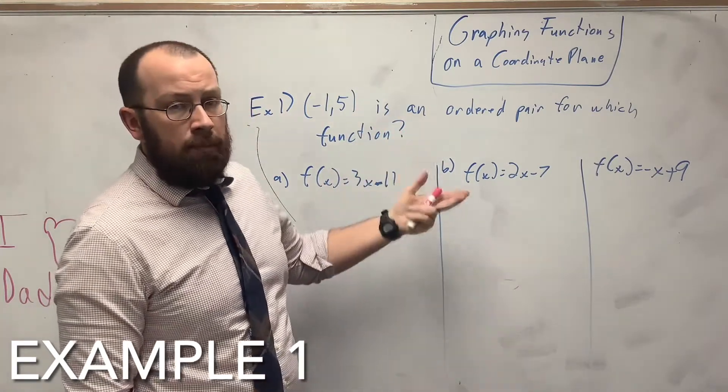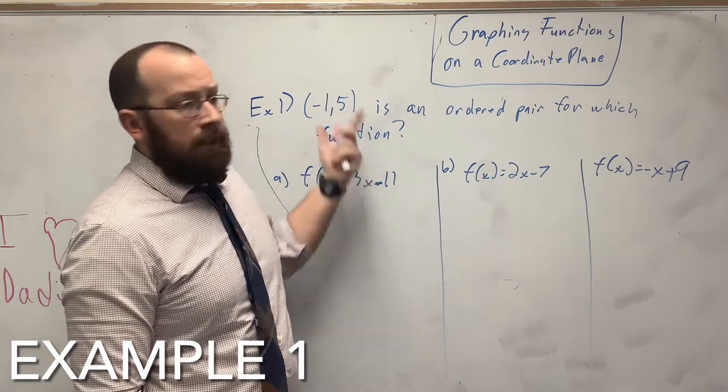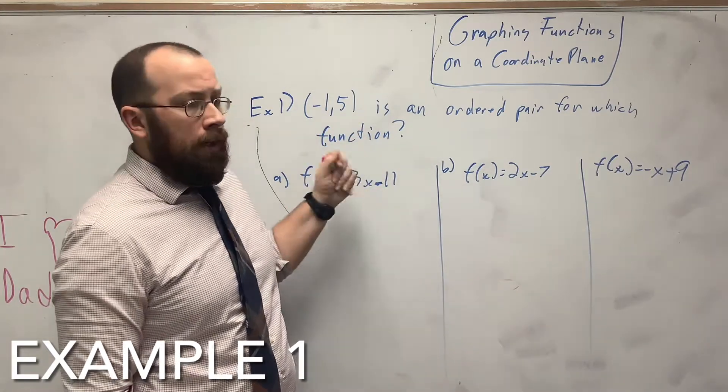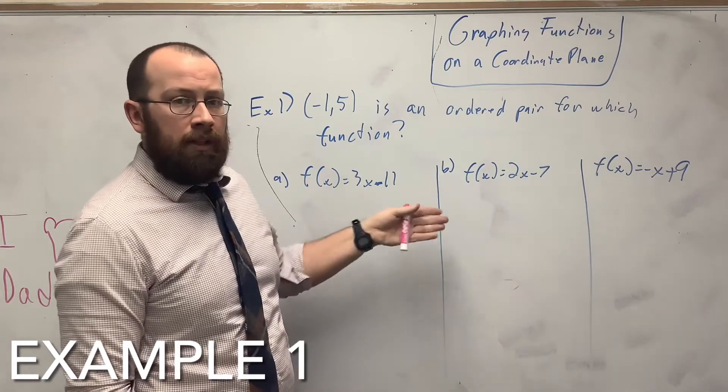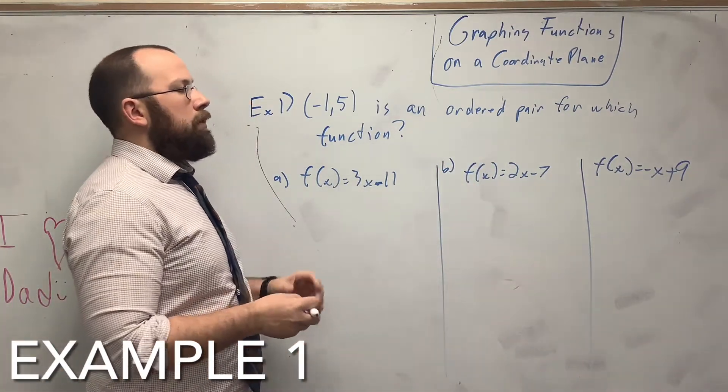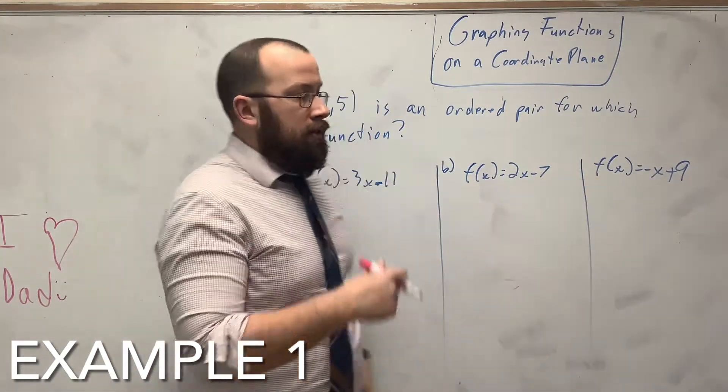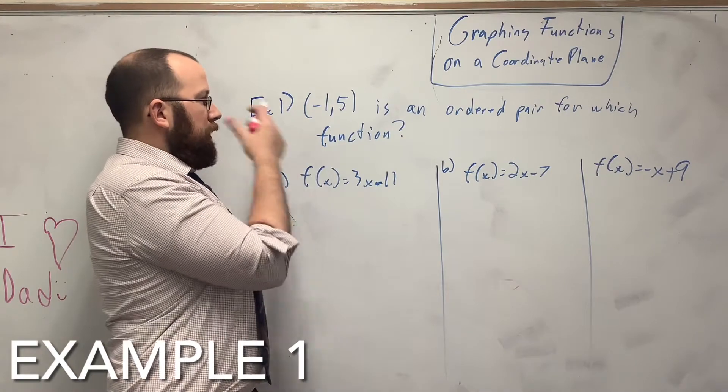We've done this in previous lessons. This is basically graphing functions by using a point. So you used 1, then 0, then 2, 3, 4, and then you got your points and you graphed it. And this one is just trying to do it more the opposite. Which one of these does it match up with? Alright, so to do this, you just have to plug it in.